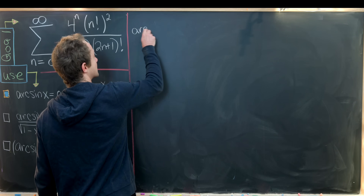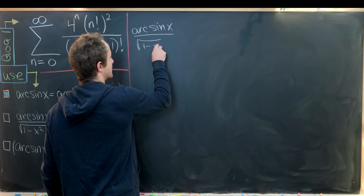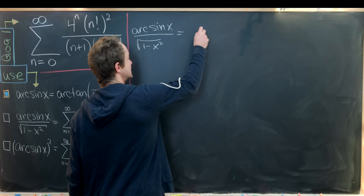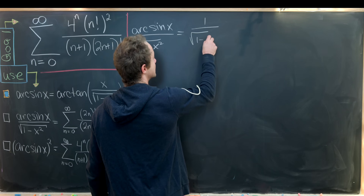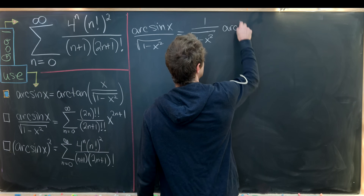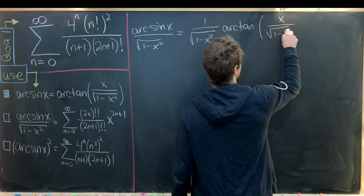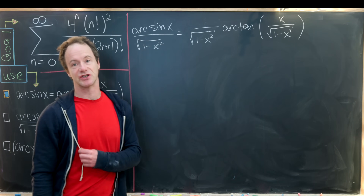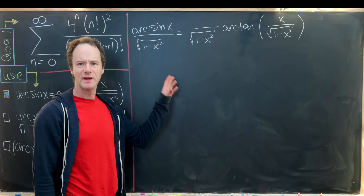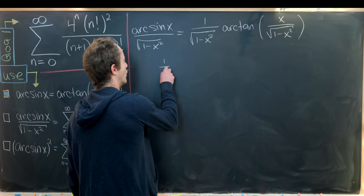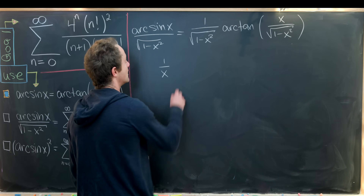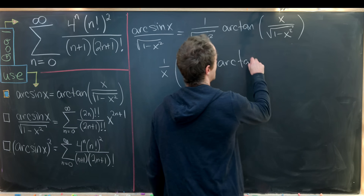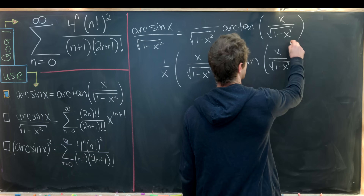To derive this expansion, we take arcsin(x)/√(1 - x²) and apply our first identity to rewrite it as (1/√(1 - x²)) · arctan(x/√(1 - x²)). It's easier to write the inverse tangent as a series than the inverse sine. We then factor out 1/x to rewrite this as (1/x) · (x/√(1 - x²)) · arctan(x/√(1 - x²)).